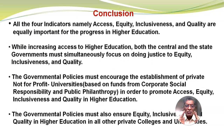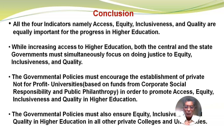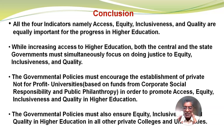In conclusion, all four indicators — access, equity, inclusiveness and quality — are equally important for the progress of higher education. While increasing access, both central and state governments must simultaneously focus on doing justice to equity, inclusiveness and quality. Government policies must encourage the establishment of private, not-for-profit universities based on corporate social responsibility funds and public philanthropy, in order to promote access, equity, inclusiveness and quality in higher education. Governmental policies must also ensure equity, inclusiveness and quality in all other private colleges and universities.